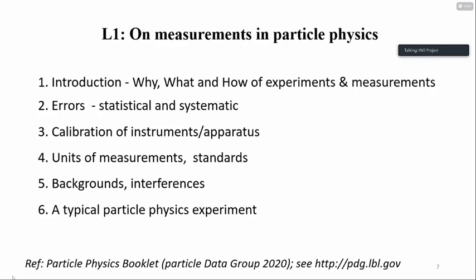Now I come to the first part: measurements in particle physics. The plan is to cover the what, why, and how of experiments and measurements; then say a little about errors — basically two types, statistical and systematic; highlight the importance of calibration of instruments; cover units of measurement and standards; and say something about backgrounds and interferences in typical physics experiments.